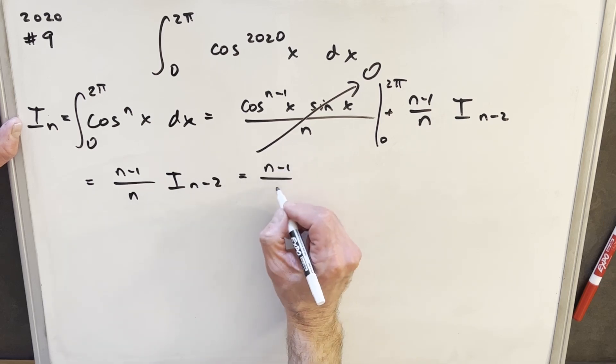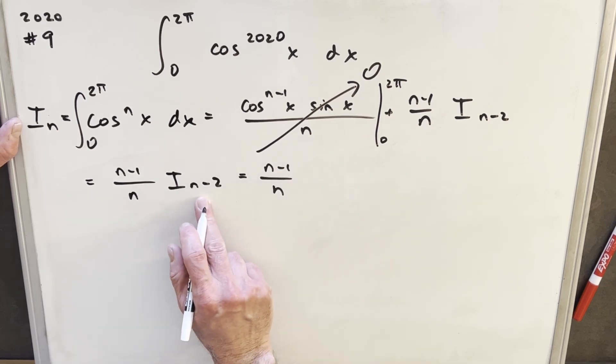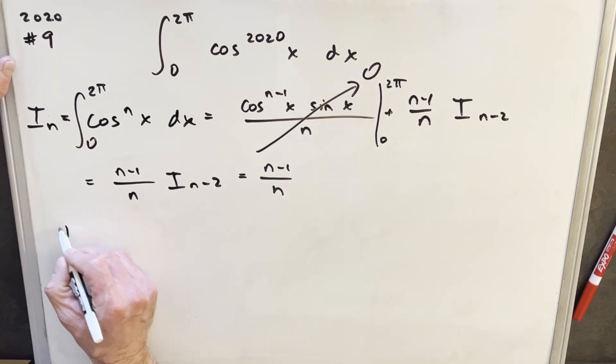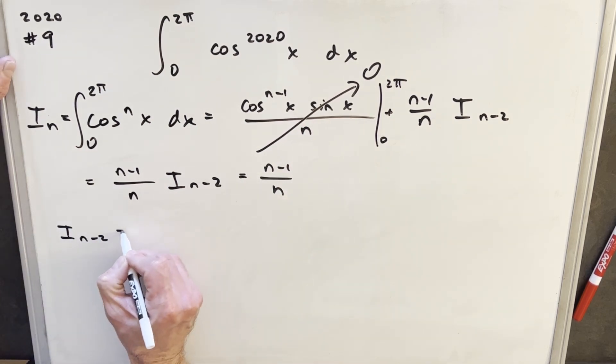So we have our n minus 1 over n. And what's going to happen here? Well, we do the same formula again. Let's just go over here. If we look at i n minus 2 and we use the same formula.